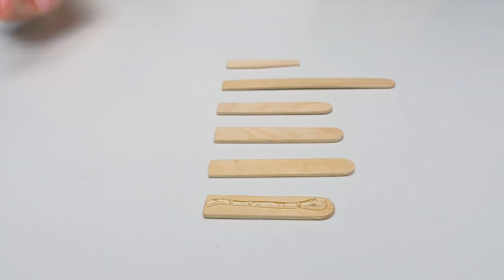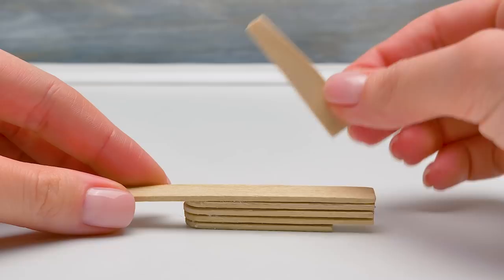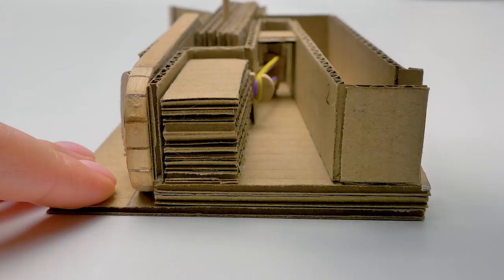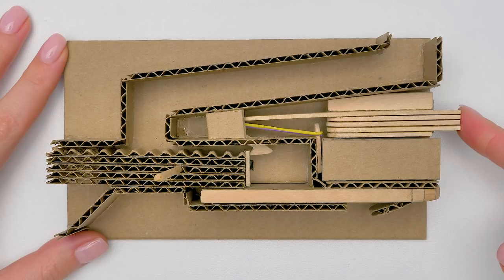Guys, the last one we glue crosswise. There. Now here we put the cardboard platform and insert the popsicle sticks. That'll be the lever of our pushing mechanism.